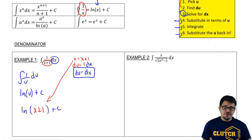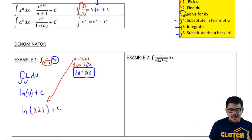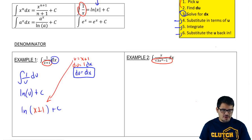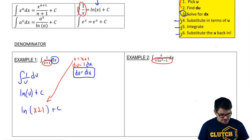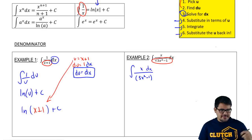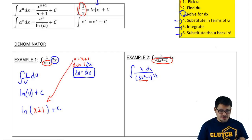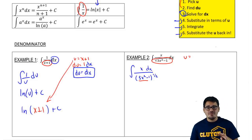Now let's move to example 2. I made it a little more difficult. Here we have a denominator, but we also have a function of 3x squared minus 1 being raised to a power inside the denominator. The question is: what do I make equal to u? I'm going to start off by rewriting the whole integral as x dx over 3x squared minus 1 raised to the 1 half. So what do I let equal to u — the whole denominator, or just the inside of the function being raised to a power?